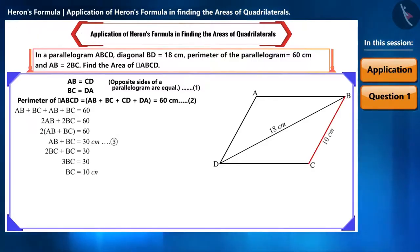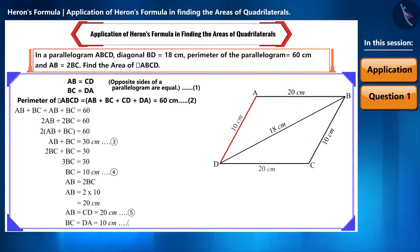Since AB is equal to 2 BC, AB will be equal to 20 cm. Since AB is equal to CD, the measure of CD will also be 20 cm. And DC is equal to DA. Hence, DA will also be 10 cm.